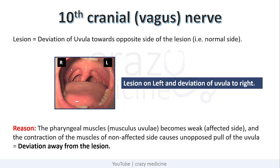First of all, the 10th cranial nerve, that is the vagus nerve. In case of lesion, there is deviation of uvula towards the opposite side of lesion, that is towards the normal side. For example, if there is a lesion on the left side, deviation of uvula will be towards the right side, as you can see in this figure. The reason is pharyngeal muscles become weak on the affected side, and contraction of muscles of the non-affected side causes unopposed pull of uvula, which causes deviation away from the lesion.